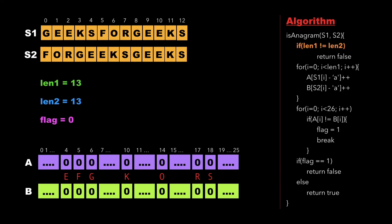First, we check whether the lengths of both strings are unequal — if so, we return false. Since length1 and length2 are both equal in our case, we move further and traverse the strings from i equal to 0 to the string length. At each traversal we update the frequency of that particular character in arrays A and B — for example, for character 'g' we update the frequency of 'g' in array A to 1.